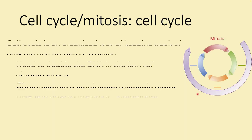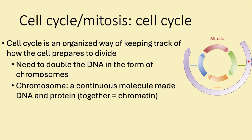The way that all of this cell division is organized is in what we call the cell cycle. The cell cycle is an organizational tool — it's real, it does exist — but we divide it into stages to make our lives easier. During the cell cycle we double the amount of DNA in our cells, in the form of chromosomes. A chromosome is a continuous piece of DNA with protein; this combination is called chromatin.